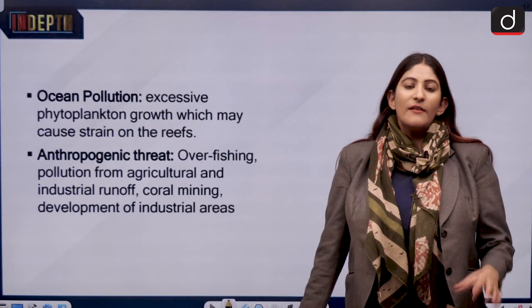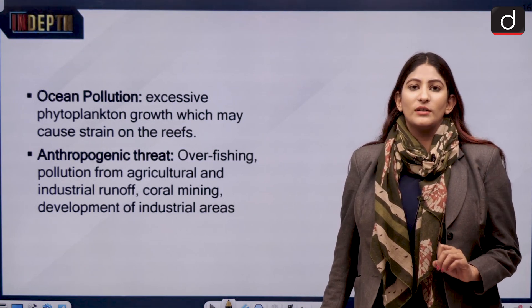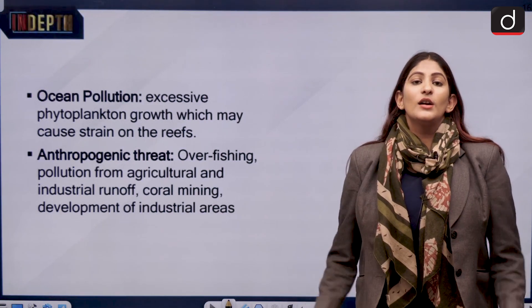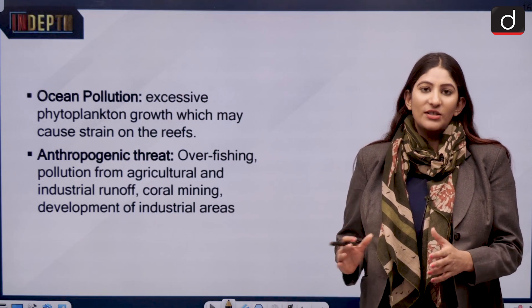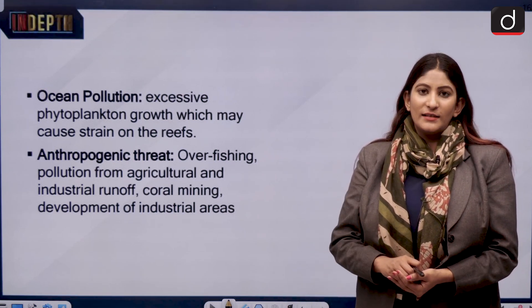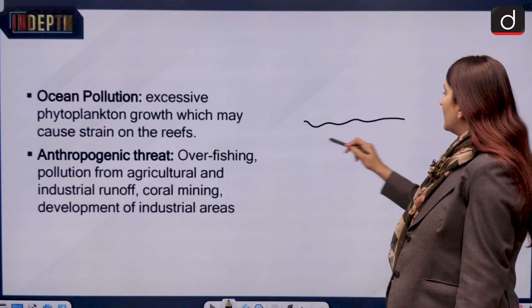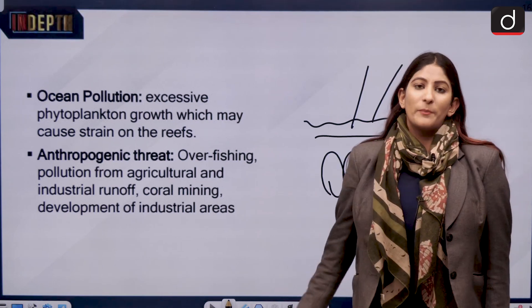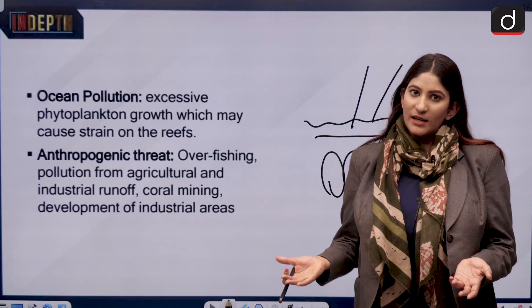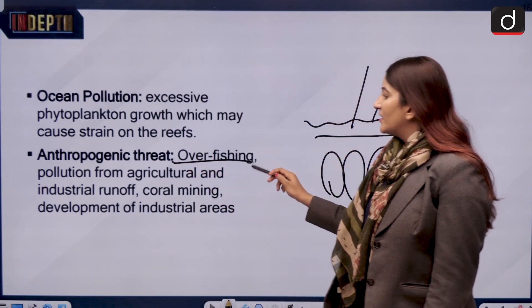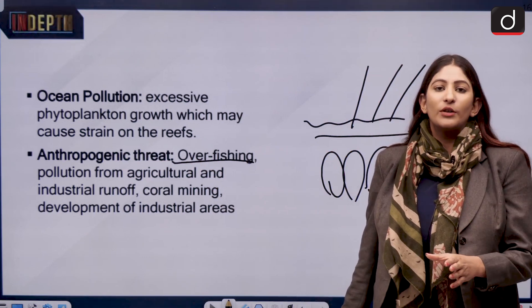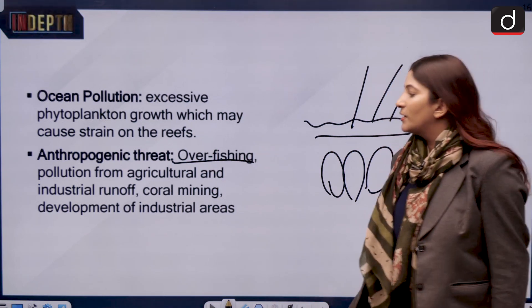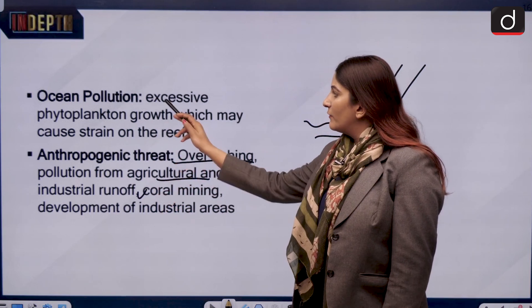Ocean pollution is another cause: when too many nutrients — from fertilizers and pesticides — enter the water, phytoplankton growth is triggered, which blocks sunlight from reaching the corals, and zooxanthellae leave again. Anthropogenic threats include overfishing, where corals get trapped and damaged in fishing nets, as well as pollution from agricultural and industrial runoff.